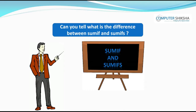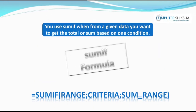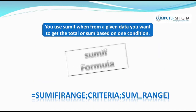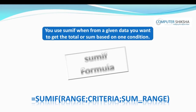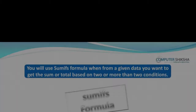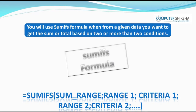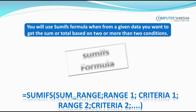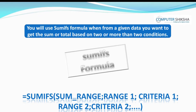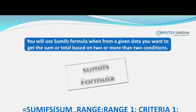Can you tell what is the difference between SUMIF and SUMIFS? You use SUMIF when from a given data you want to get the total or sum based on one condition. You will use SUMIFS when from a given data you want to get the sum or total based on two or more than two conditions.